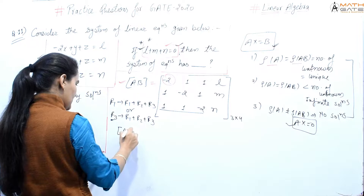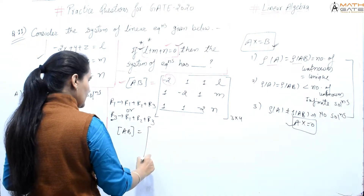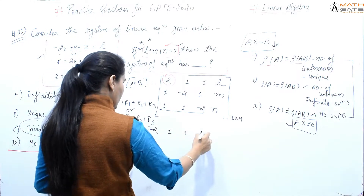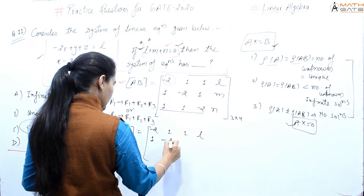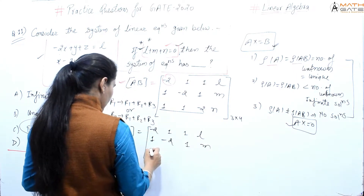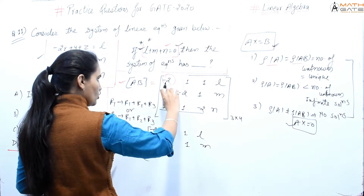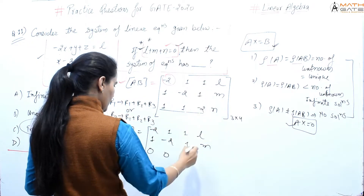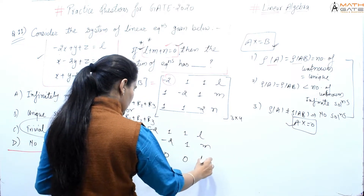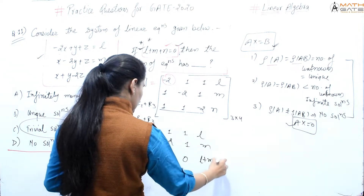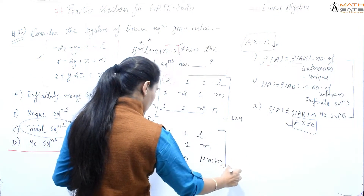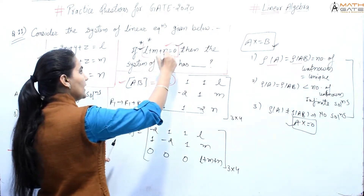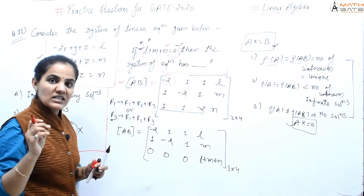After applying R3 = R1 plus R2 plus R3, the matrix becomes: row 1: minus 2, 1, 1, l; row 2: 1, minus 2, 1, m; row 3 becomes: 1 minus 1 = 0, 2 minus 2 = 0, 1 minus 1 = 0, minus 2 plus 2 = 0, and the last entry is l plus m plus n. So the third row is all zeros except the last entry which is l plus m plus n. The question tells us that l plus m plus n equals 0.